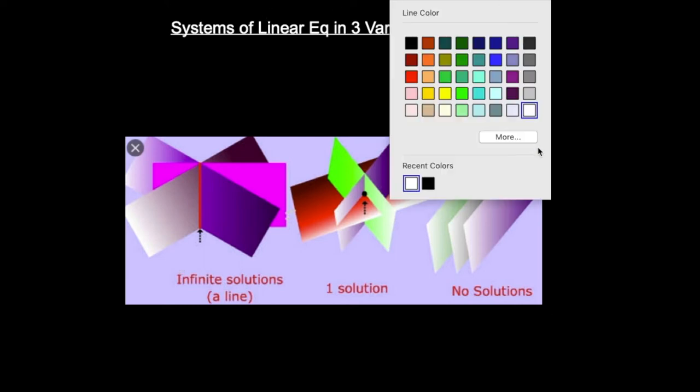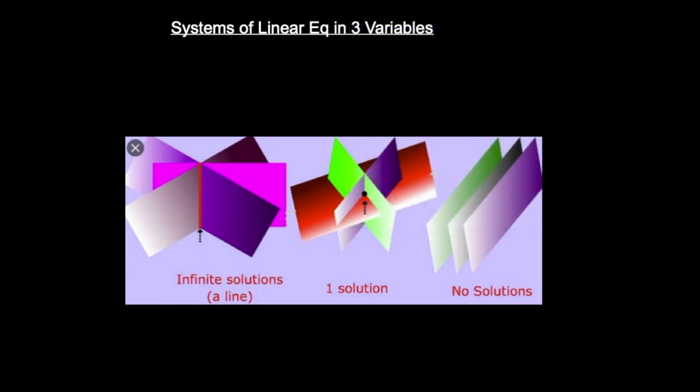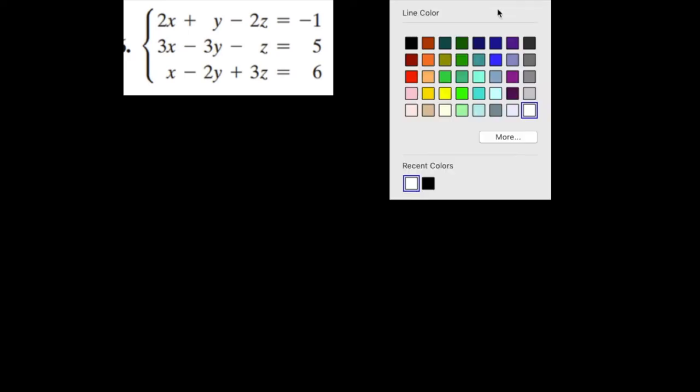The solution to a system of three variables is an ordered triple with an x, a y, and a z coordinate — called an ordered triple because there are three parts. With a system of two equations you shrink it down to one variable. Here we're going to take this system of three equations and shrink it down to a system of two, then to one, and then backtrack. So you go from three to two to one and then back up to solve for all the unknowns.